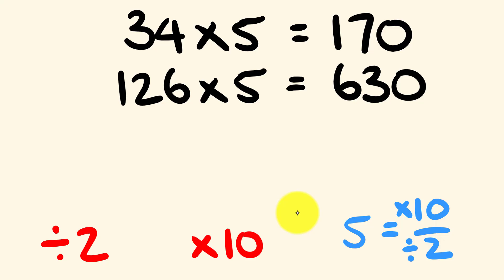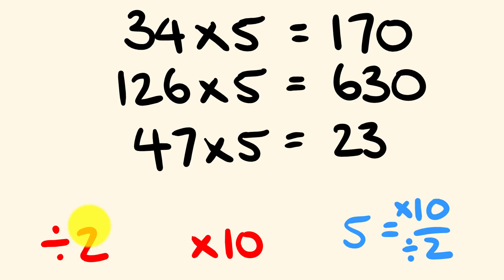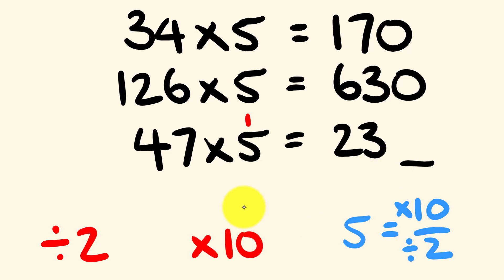Now what about a variant where it gets a little bit harder — say 2 doesn't go into the number really nicely, like an odd number. Say it was 47 multiplied by 5. We divide by 2 using remainders: 47 divided by 2 is 23 with 1 remainder, since 2 times 23 is 46. Then we multiply by 10, leaving a space as a placeholder, and add 1 times 5, which is 5. So 47 times 5 is 235.